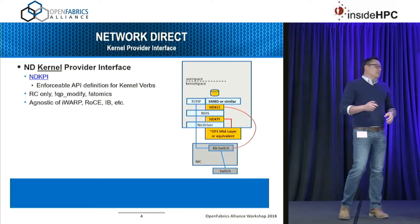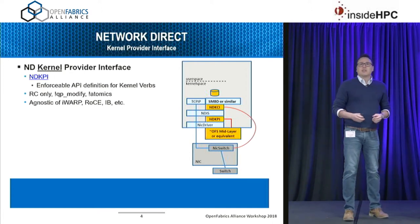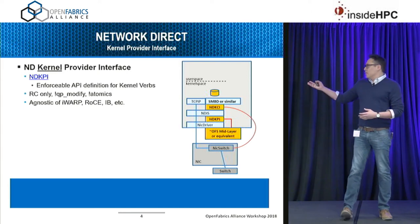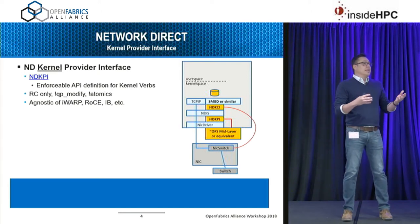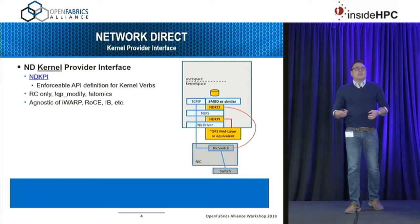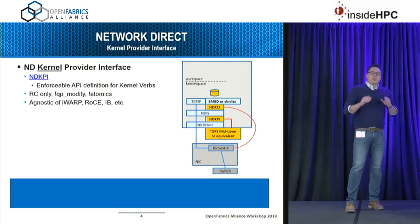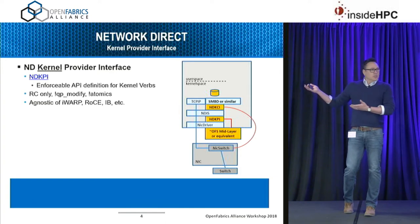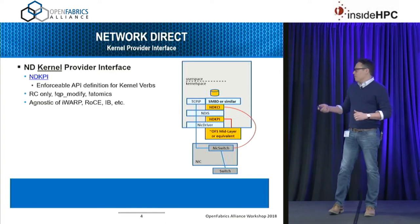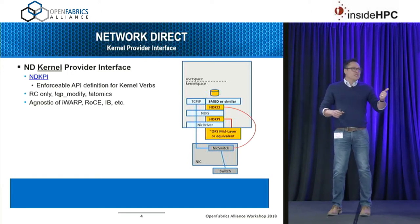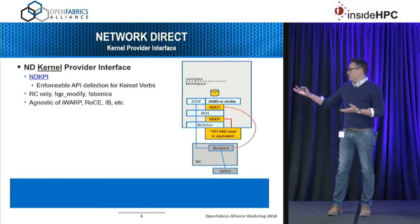In Windows, we don't use OFS. We have a layer called ND — Network Direct — with two components: user space and kernel space. The kernel space component is NDKPI, or Network Direct Kernel Provider Interface. It's built agnostic to fabric type, baseline on the common set of verb operations you'd have in IB, iWarp, and RoCE. Its real value is defining the API — structure definitions, function definitions, and all the likes.